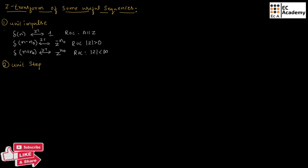Now let us see the Z-transform of the unit step function. The unit step function can be represented as U of n. If we perform Z-transform we will get Z divided by Z minus 1, and the ROC will be magnitude of Z greater than 1.